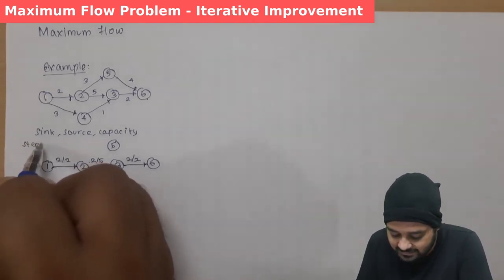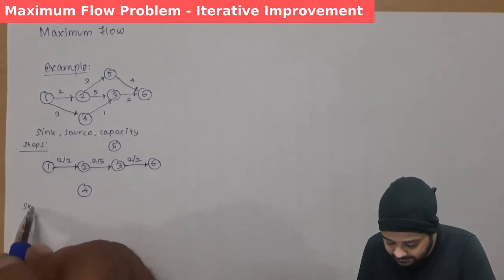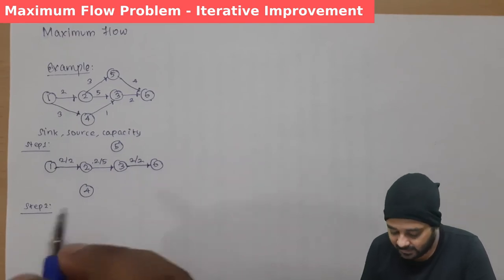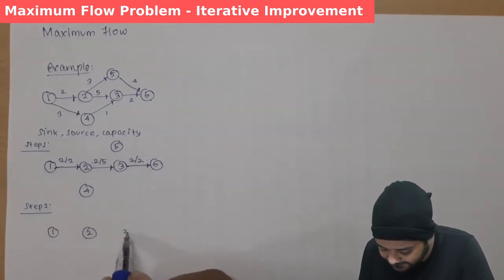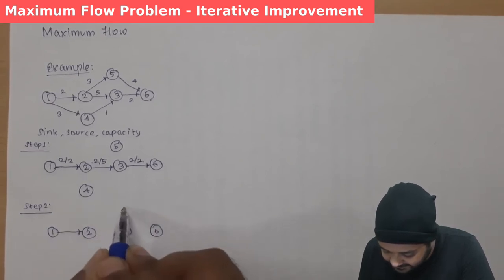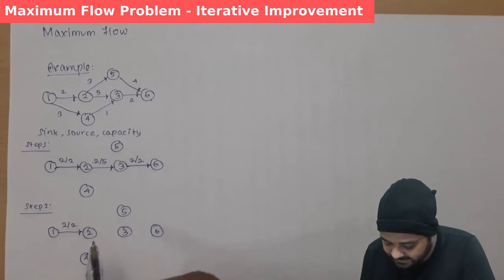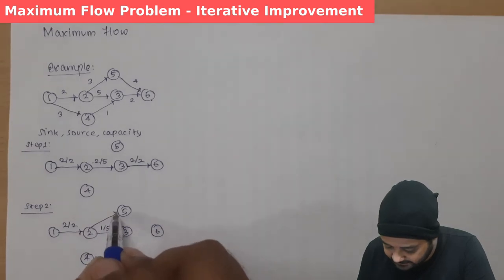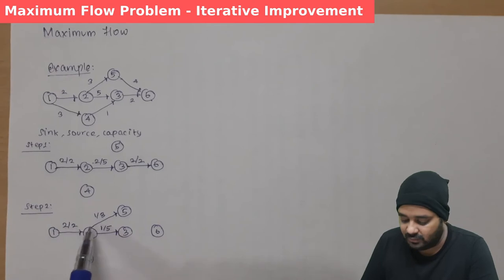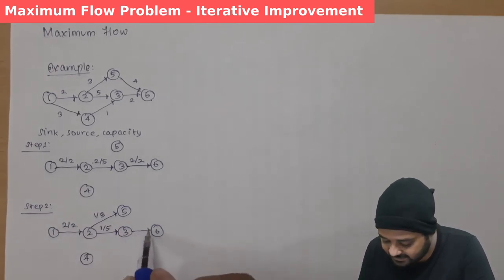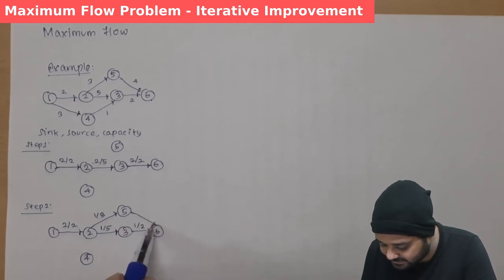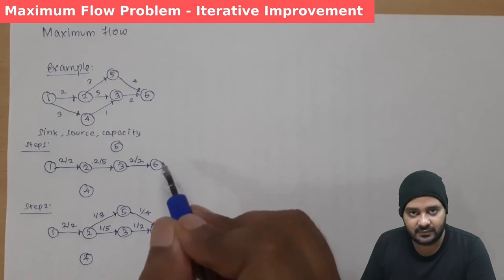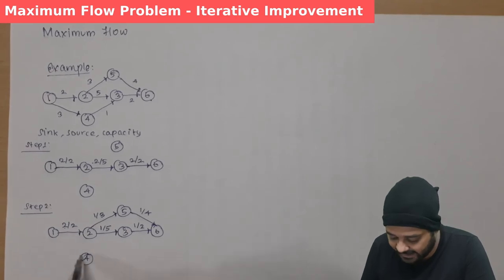In step 2, we reduce the path 1→2→3→6 by one unit. Instead of passing the entire 2 units through 2→3, we pass 1 out of 5 on that edge. We pass another 1 out of 3 through the alternate route. This splits the flow such that node 3 to 6 turns into 1 out of 2, and node 5 to 6 carries 1 out of 4. The maximum capacity of 2 is maintained, but we have freed up capacity to add another path.